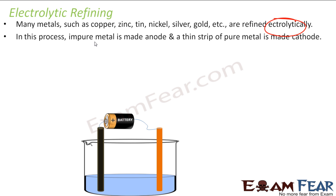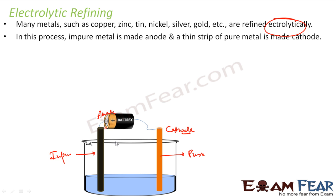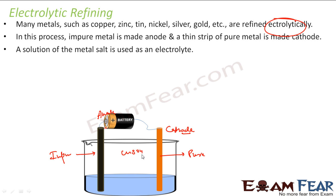In this process, an impure metal is made the anode. So, this is the anode and this is the cathode. The anode is impure and the cathode is pure. Assuming it is copper — this is impure copper which has impurities, and this is pure copper, a very thin strip. The impure metal is a thick strip. A solution of metal salts is used — since this is copper, I will use copper sulphate (CuSO4) as the electrolyte.